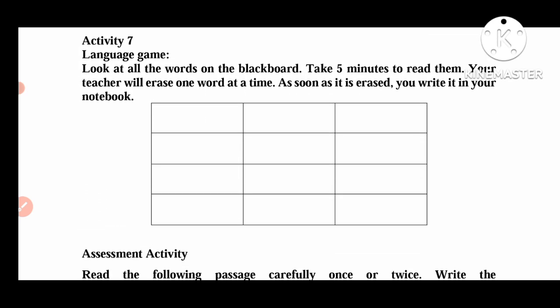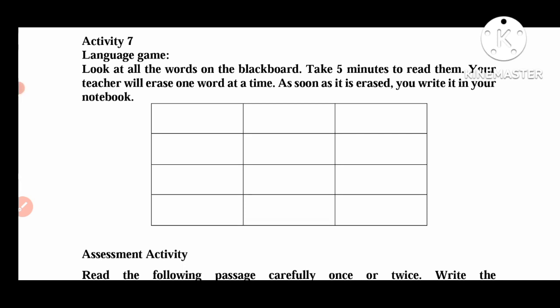Next is a language game — Activity 7. Look at all the words on the blackboard and take 5 minutes to read them. Your teacher will erase one word at a time. As soon as a word is erased, you will write it in your notebook. The teacher writes many words on the blackboard; students read and memorize them, then write the erased words in their notebooks.